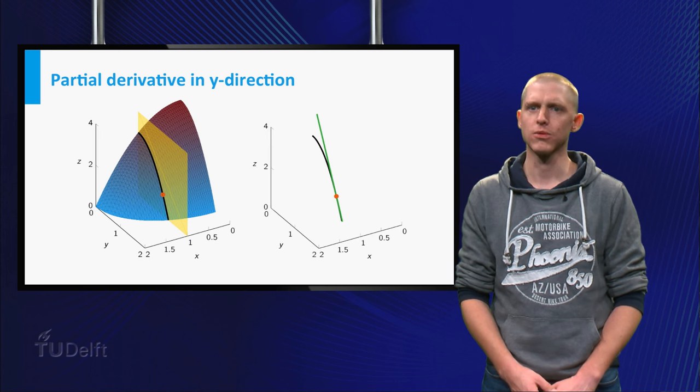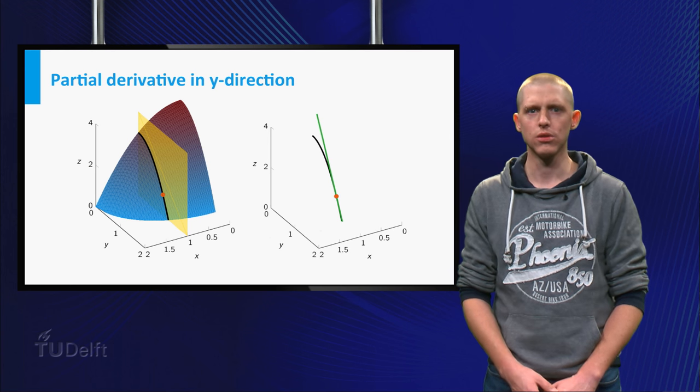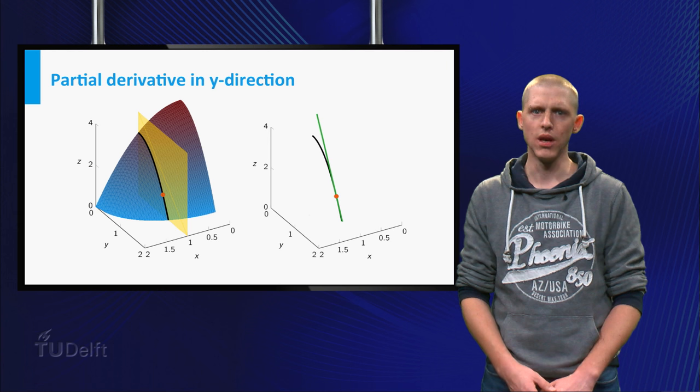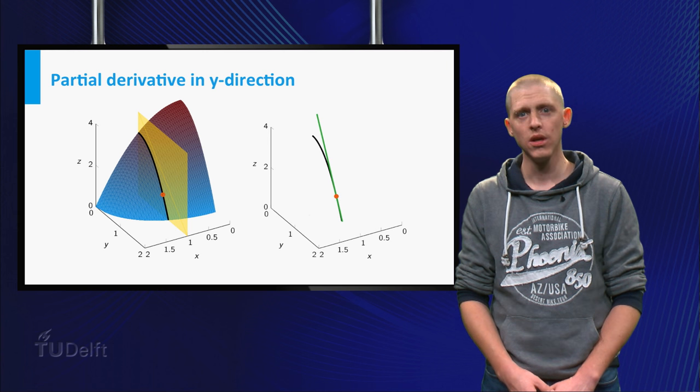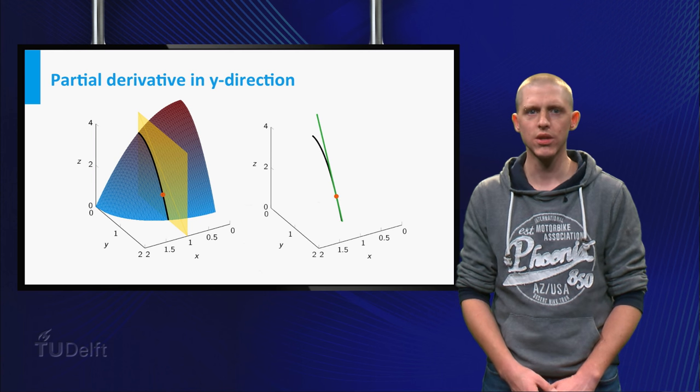Geometrically, f_y(a,b) equals the slope of the tangent line to the curve c2 at the point (a, b, f(a,b)), where c2 is the intersection of the graph of the function and the plane with equation x = a.